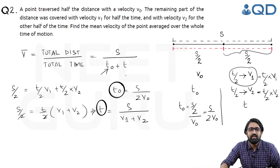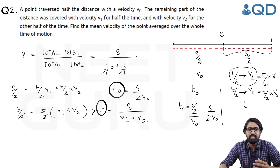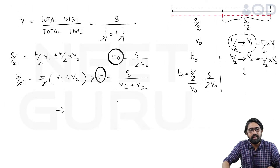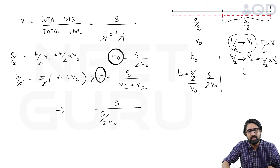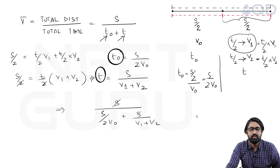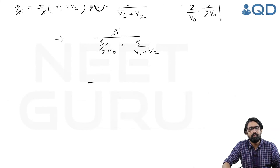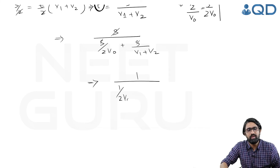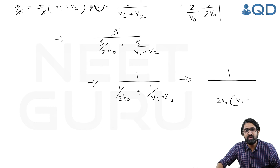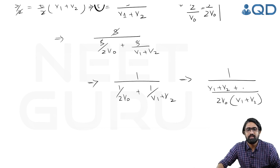With both t0 and t known, we substitute into the main equation. So v-bar equals s divided by [s/(2v0) + s/(v1+v2)]. Cancelling s from all terms gives 1 divided by [1/(2v0) + 1/(v1+v2)]. Taking the LCM and adding these two fractions gives the denominator as (v1 + v2 + 2v0) / (2v0(v1 + v2)).